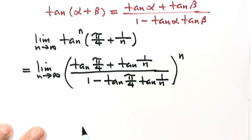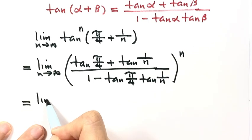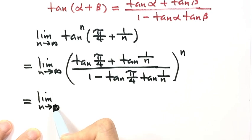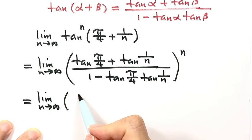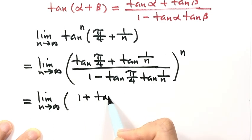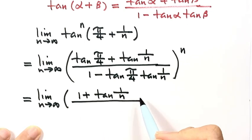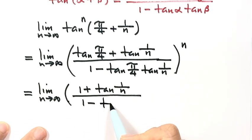Now let's simplify. Because tangent of pi over 4 is 1, both instances become 1. So the expression simplifies to (1 plus tangent (1 over n)) over (1 minus tangent (1 over n)), raised to the power of n.